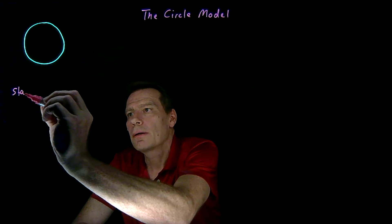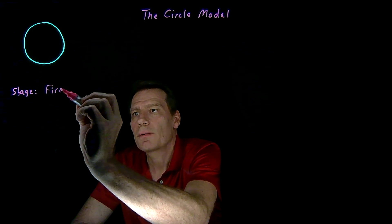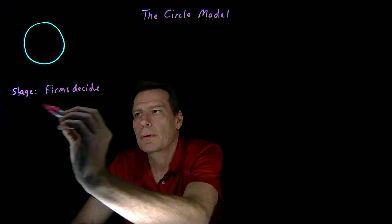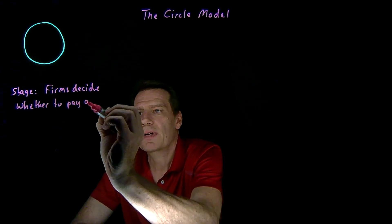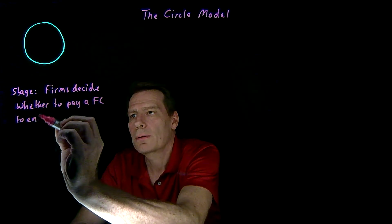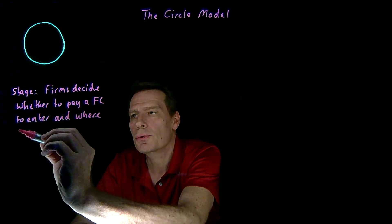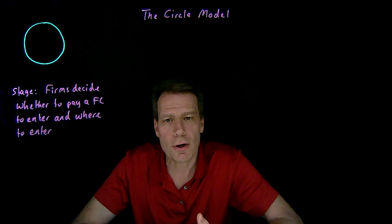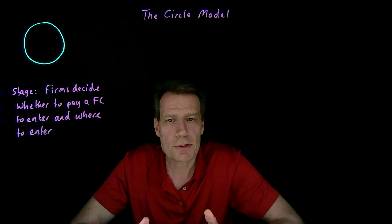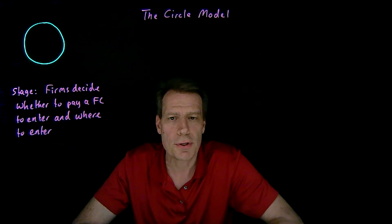We'll then define a two-stage game, where in stage one, the circle is initially empty and firms decide whether to enter — and in particular, whether to pay a fixed cost to enter, and if so, where to enter and what product characteristic to choose. So firms can enter this market, but they have to pay a fixed entry cost to set up their shop.